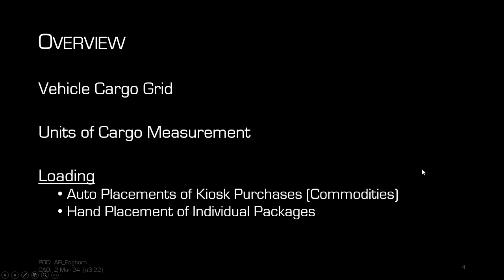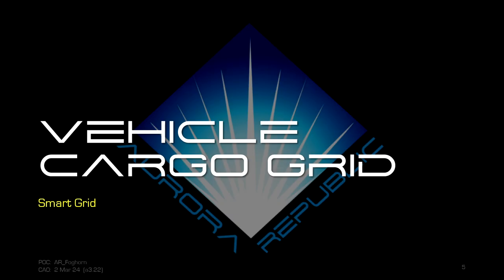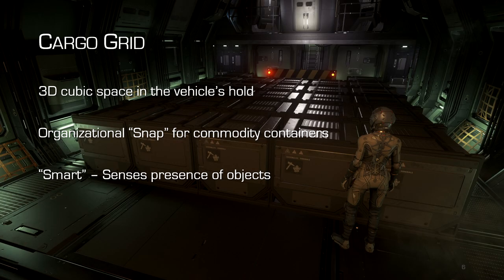What we're going to talk about tonight: the vehicle cargo grid as it works in Star Citizen, units of cargo measurement, and what the loading and unloading procedures are as they currently stand, including what is known to be coming in the future. The vehicle cargo grid is basically the whole centerpiece of how you haul cargo in Star Citizen. It is a smart grid — a 3D cubed space specific to your vehicle and its hold.